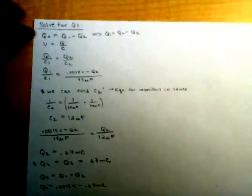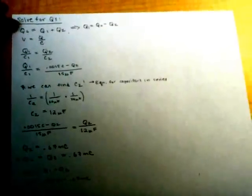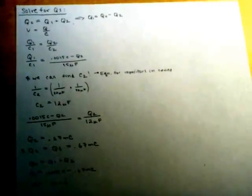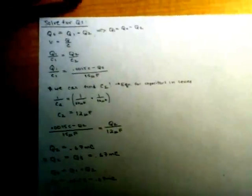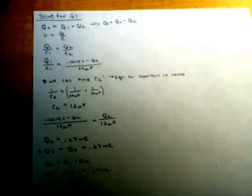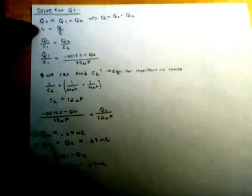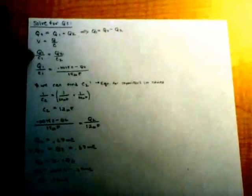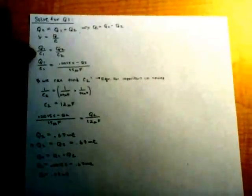Moving on, to find the charges of each, we note that Q0 equals Q1 plus Q2, and moving this around a bit, we get that Q1 equals Q0 minus Q2. And using the equation V equals Q over C, we get that Q1 over C1 equals Q2 over C2, because the voltages are the same in each loop.